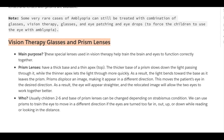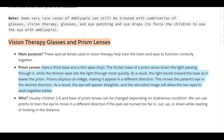Vision therapy glasses and prism lenses: the main purpose of these special lenses is to help train the brain and eyes to function correctly together. Importantly, these glasses and prism lenses do not help someone see better — they train the brain and eyes to function correctly together. Prism lenses have a thick base and a thin apex. The thicker base slows down light passing through it, while the thinner apex lets light through more quickly. As a result, light bends toward the base as it leaves the prism, displacing an image and making it appear in a different direction, which moves the patient's eye in the desired direction so the eye appears straight and both eyes can work together better.